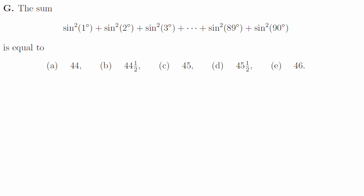1g. We can use the fact that sine of 89 degrees is cosine of 1 degree, so sine squared 89 plus sine squared 1 degree is 1. Similarly, sine squared 2 degrees plus sine squared 88 degrees is also 1, all the way up to sine squared 44 degrees plus sine squared 46 degrees is also 1. Leftover, we've got sine squared of 45 degrees, which is 1 half, and sine squared of 90 degrees, which is 1, so the total is 45 and a half.